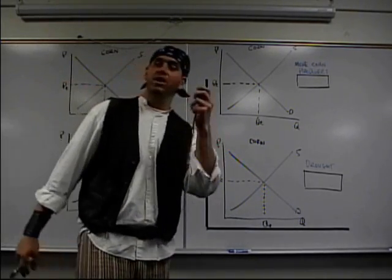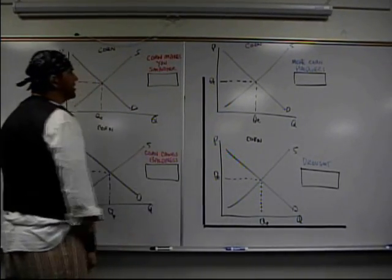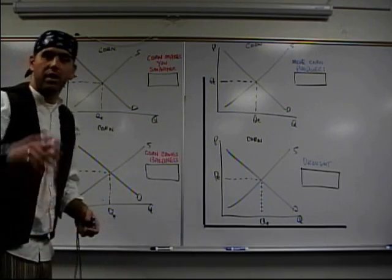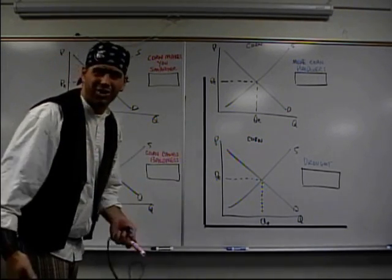60 seconds to talk about shifting the curve. Ready and boom, go. The first example is corn. Corn makes you smarter. Making you smarter is a demand shifter because it affects consumers. It's not going to affect the production, so it's not supply.